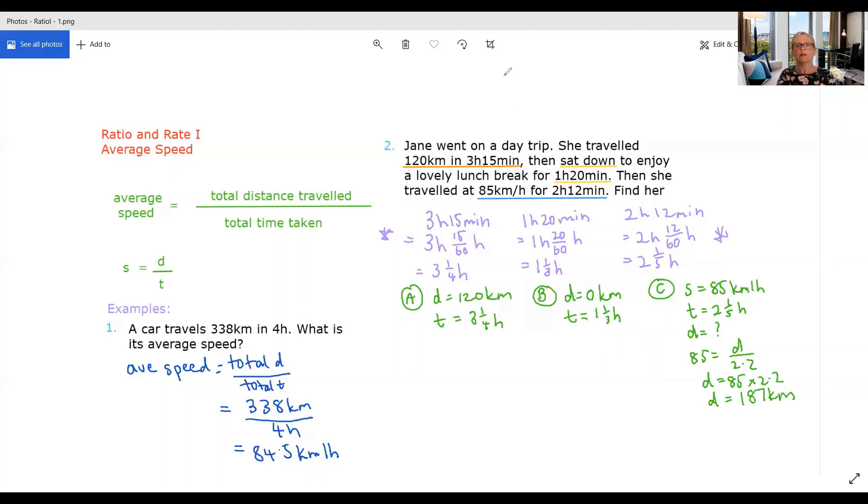We are now at the point where we can put all of this together and we can say average speed is total distance over total time. And I would just use brackets here and add them up. So we've got our total distance is 120 plus zero plus 187 kilometres. All over, in hours we had three and a quarter plus one and a third plus two and a fifth.